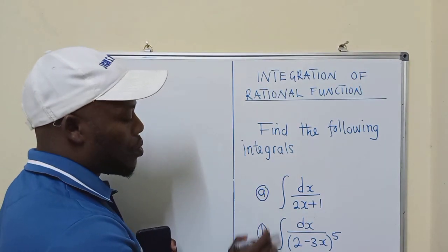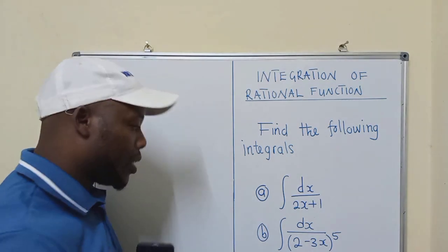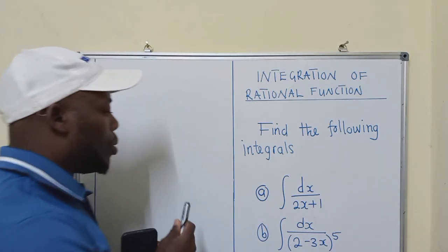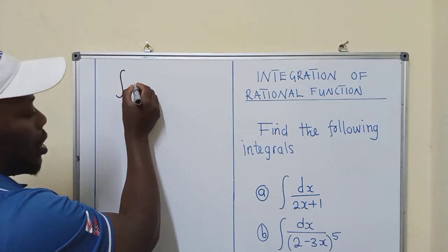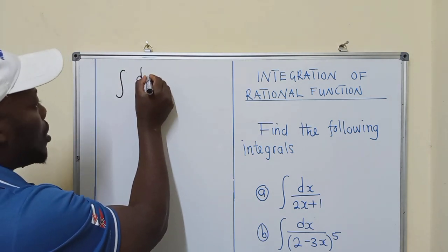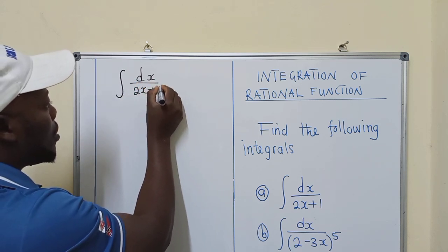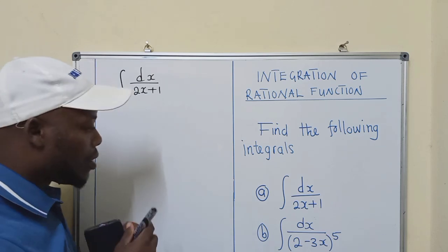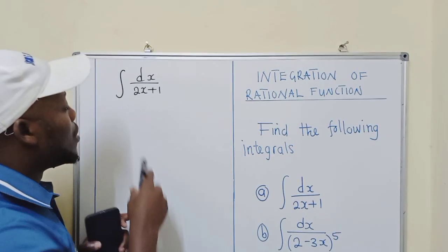So I've got these two questions of which we need to integrate. Okay, so let's start with the first one. Well, I've got the integral there of dx over 2x plus 1. So how do we integrate this one? It's very simple to integrate.